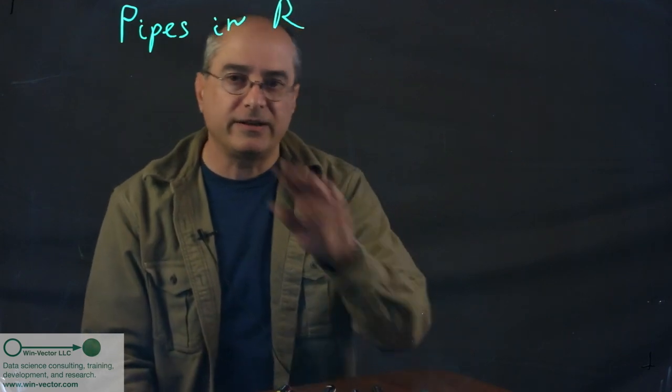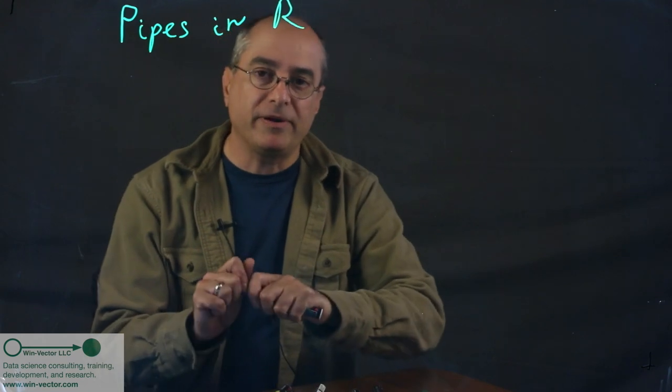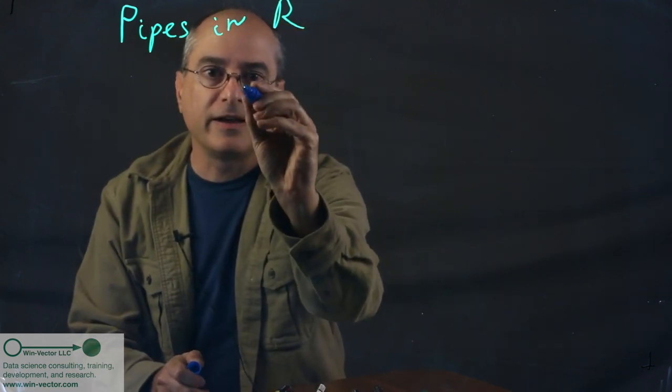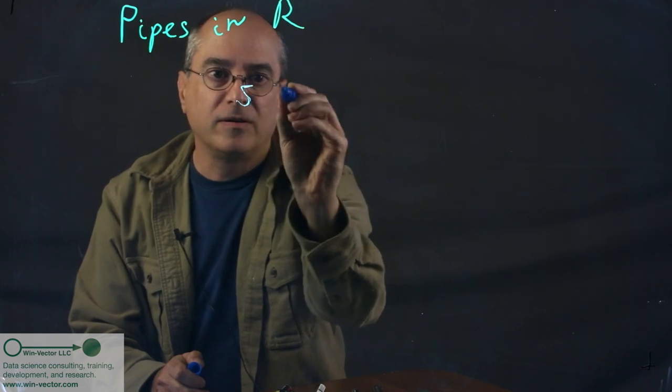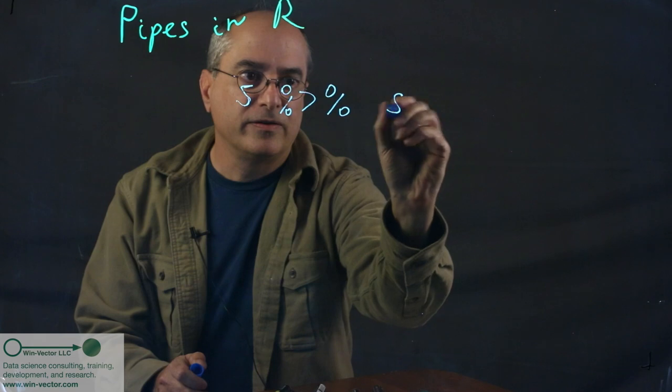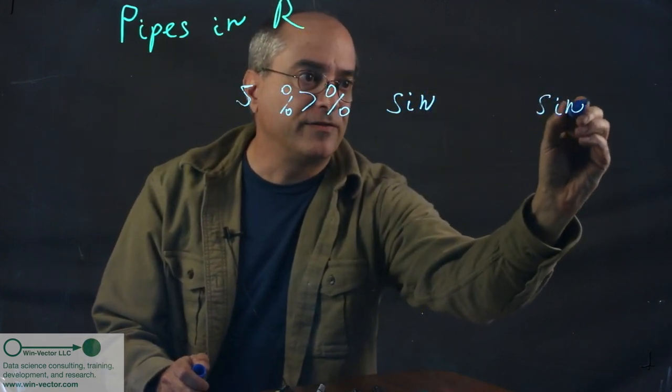For this Data Science Chalk Talk, I'd like to talk about pipes in R. By far, the most popular and important pipe in R is the Magrittr pipe, which lets one write things like 5 pipe sin as a synonym for sin of 5.